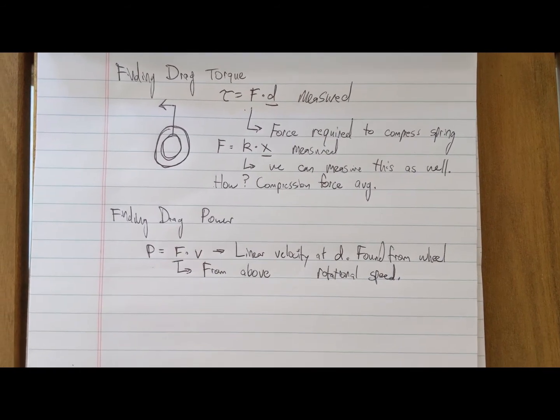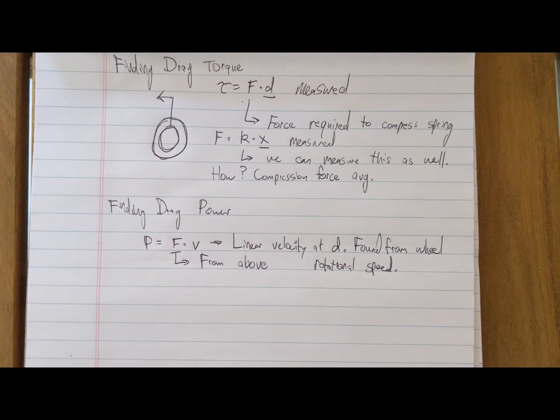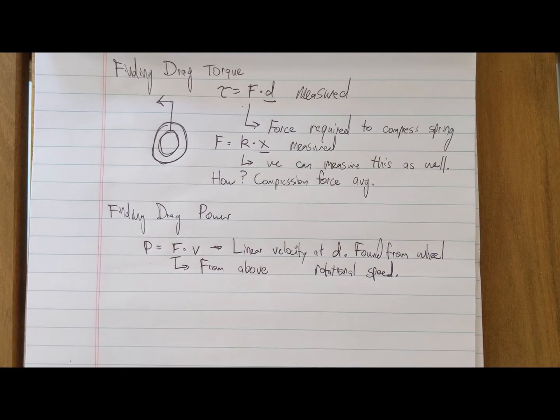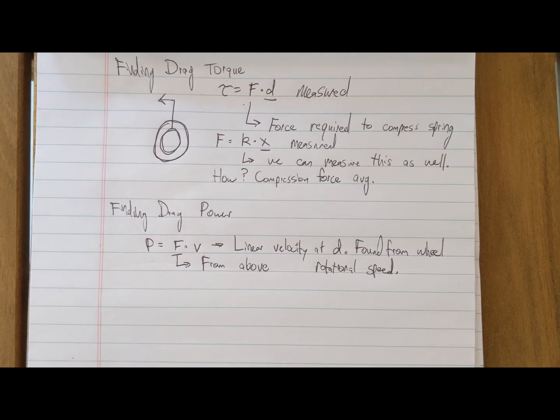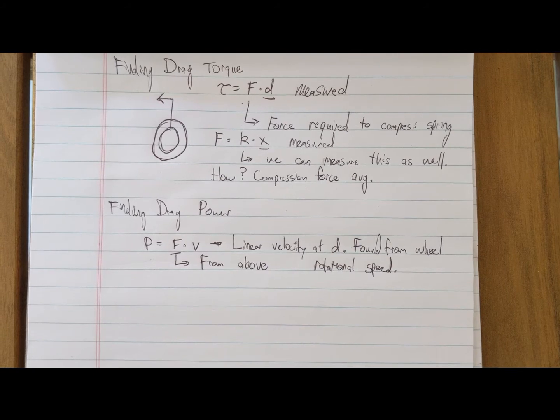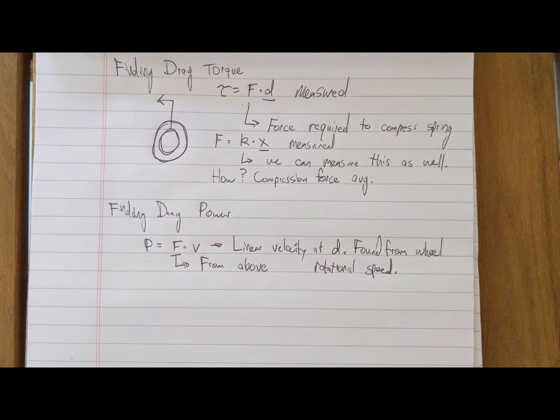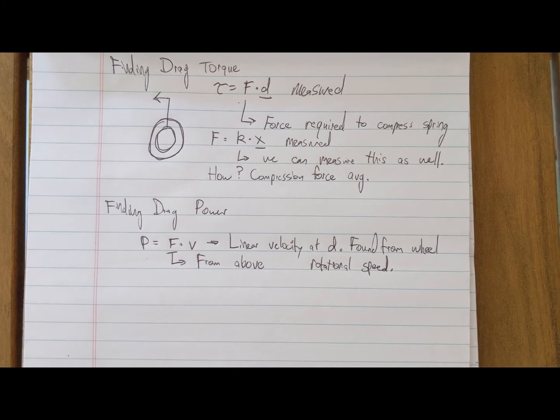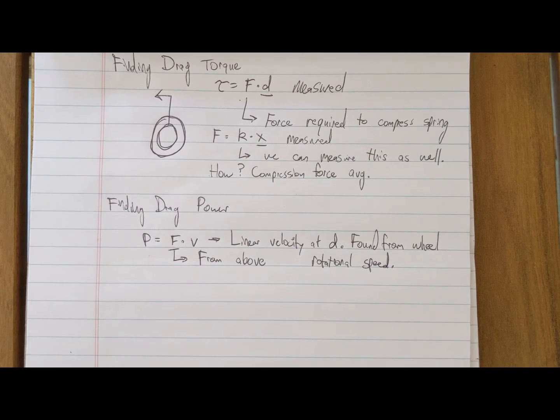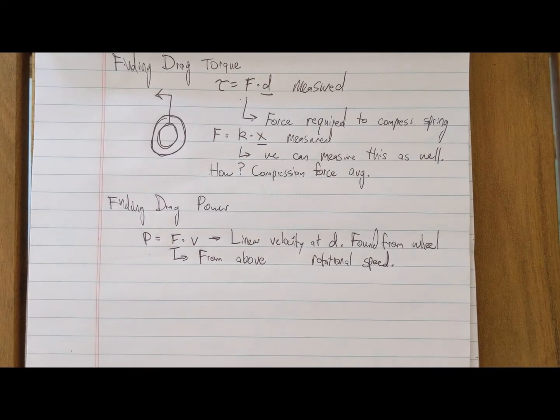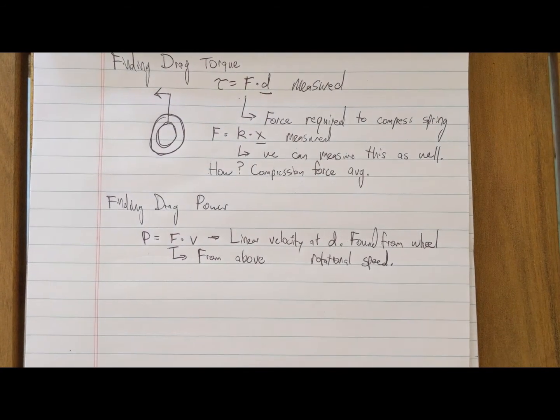The next thing is finding the drag power. Power equals force times velocity. The average force exerted on the hub we'll find from above, and the velocity is the linear velocity at the steel drive ring distance, found from the wheel rotational speed. For our example, we're going to be measuring at 10, 15 and 20 miles per hour to simulate downhill speeds.